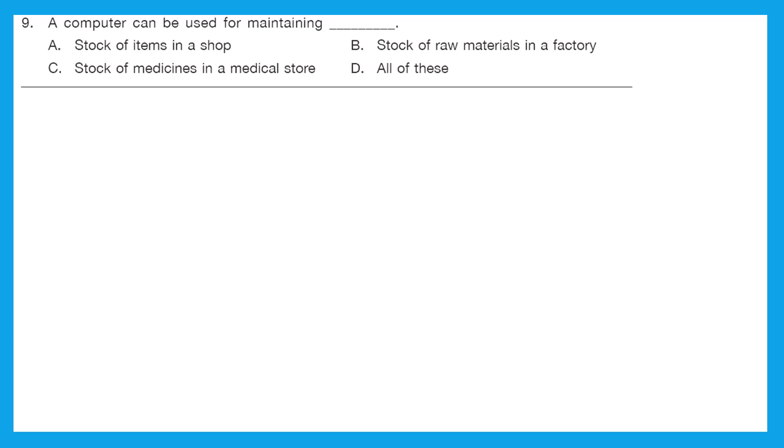Question 9: a computer can be used for maintaining A, stock of items in a shop, B, stock of raw materials in a factory, C, stock of medicines in a medical store or D, all of these. It can be used for all of these. So the right answer is option D.